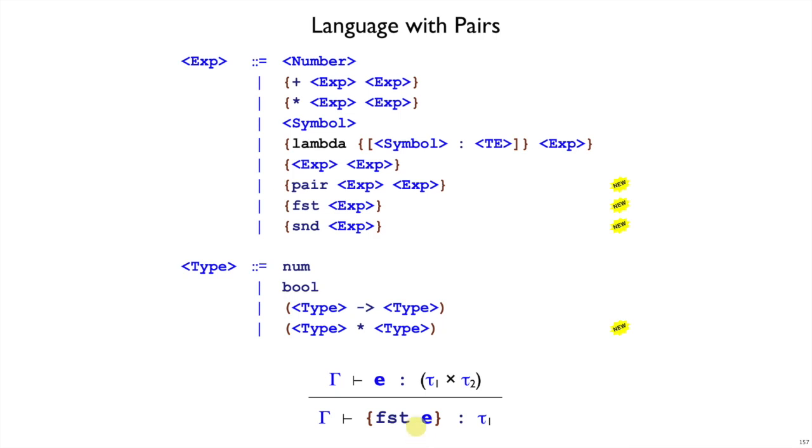And then the rules that go with it, we also have to cover FST and SND. So first of some expression E is, if you type it, it's got to have a cross type, and then the type of first is the type from the first part, and the type for second is the type of the second one.